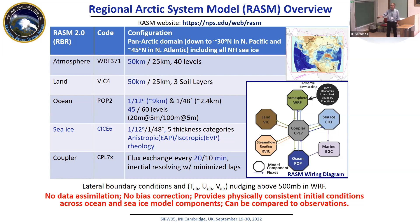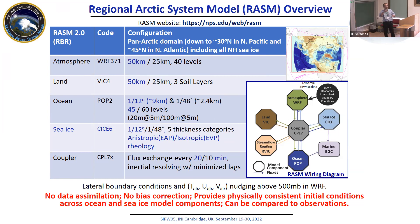A very important take-home message: we are not using any data assimilation and we are not doing any bias correction. All results shown are raw. Because we emphasize fidelity in model physics rather than correcting with data assimilation or bias correction, we reach the point where our initial conditions for forecasting are physically consistent across all model components. When we do hindcast analysis forced by reanalysis, we can compare model results against observations in space and time — something you cannot do with an Earth System Model.